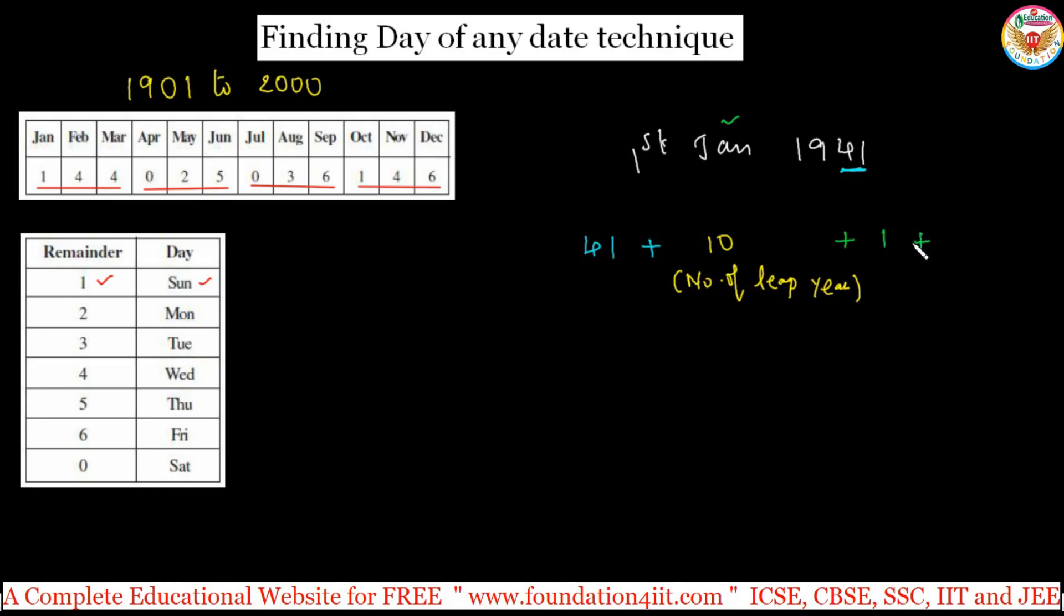Then you can take the month code. January code is 1. Plus, finally you add the date which is given, 1st January, so 1. Only four numbers you add: 41 plus 10 plus 1 plus 1, so 53.